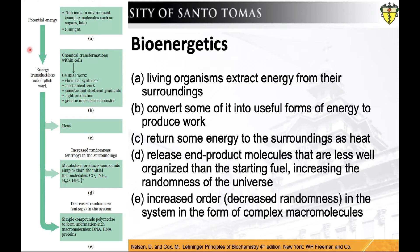Let's go through this step by step. First, organisms will have to take in potential energy from the environment — nutrients taken from the surroundings in the form of food, or for photosynthetic plants, sunlight. Subsequently, these organisms convert some of this energy into useful forms for work, like biochemical synthesis, locomotion, other mechanical work, osmotic and electrical gradients, and genetic information transfer.